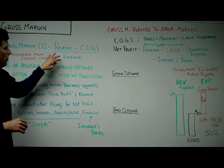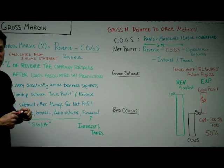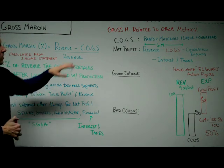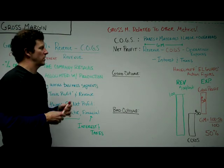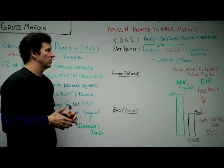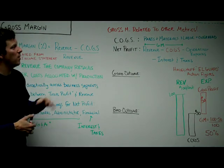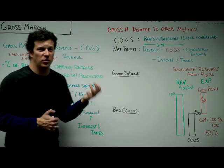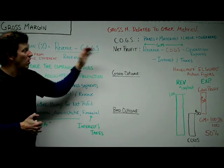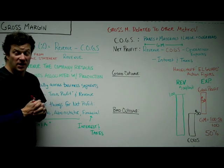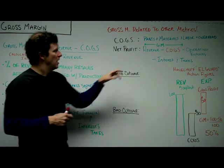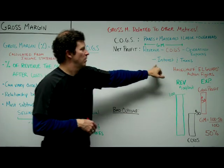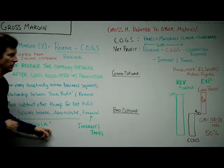It is actually a good indicator of whether a company might be profitable if they have a normal or healthy gross margin. Now let's look at gross margin related to some other metrics. The two important ones are cost of goods sold and net profit. Cost of goods sold is parts, materials, labor, overhead — the direct cost associated with producing your product. Net profit, on the other hand, is simply profit at the end of the day: is there any profit left? That would be revenue minus cost of goods sold, minus operating expenses, minus interest and taxes.